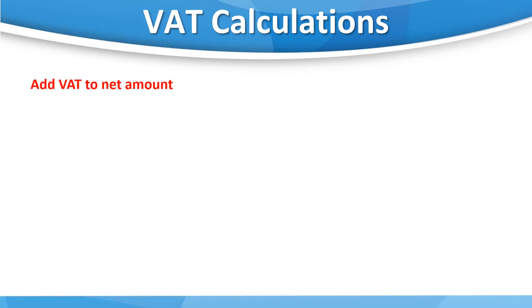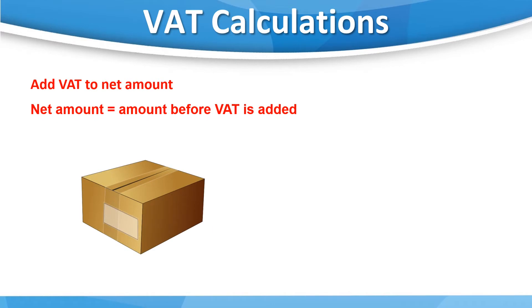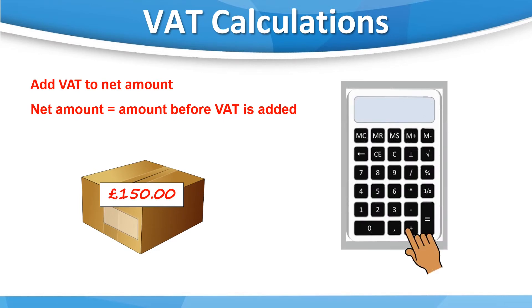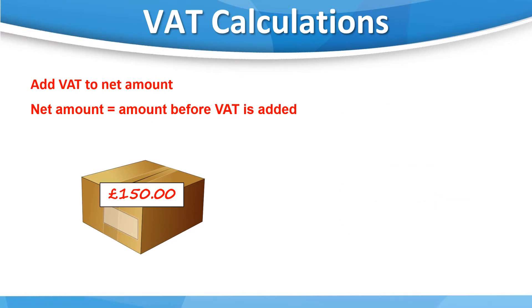The most straightforward of these calculations is when we add VAT to the net amount. The net amount is the amount without VAT. Let's suppose you're selling goods with a net value of £150. On your calculator you'll need to enter 150, then the multiply button, then type 20, and finally press the percentage button. This gives us an answer of 30. This means that we need to add £30 VAT to the £150 net price, making the final price including VAT £180.